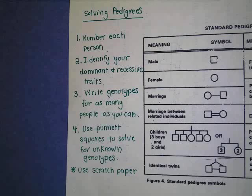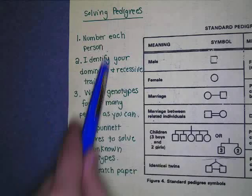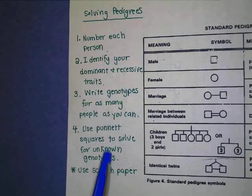You should be writing this on your pedigree notes that we have. Next to the symbols, there's a nice blank column where you can write all of this down.